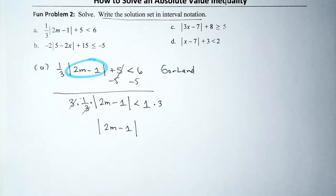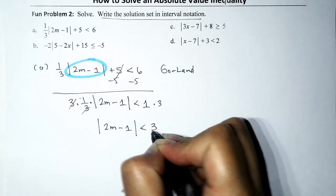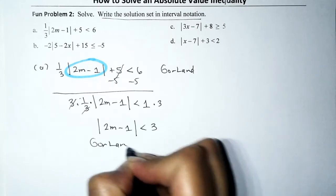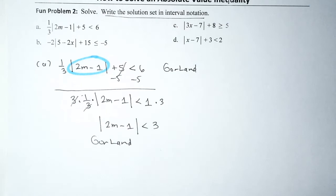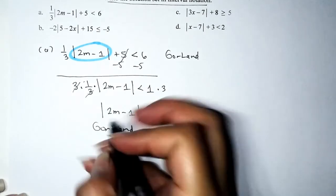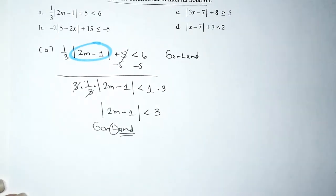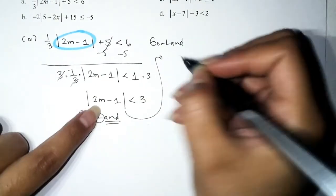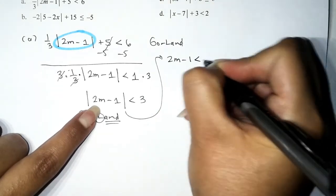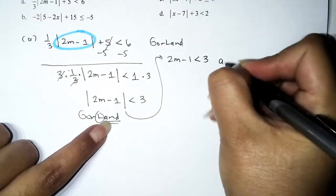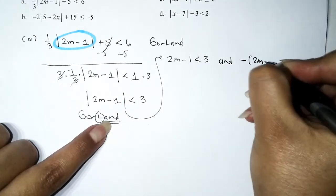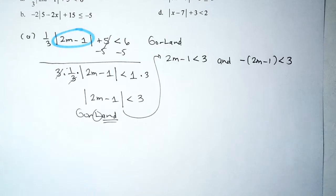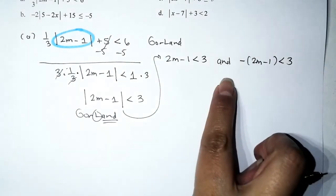We have a less-than symbol, so it's an AND kind of problem. We set it up as: (2m − 1) is less than 3 AND −(2m − 1) is less than 3. Don't forget the parentheses on the opposite side because we have to take the opposite of both terms. Now let's solve each inequality and then find the intersection.